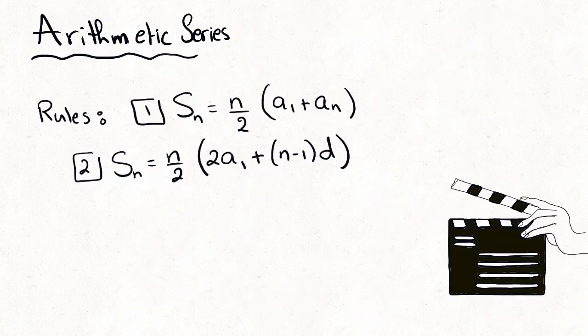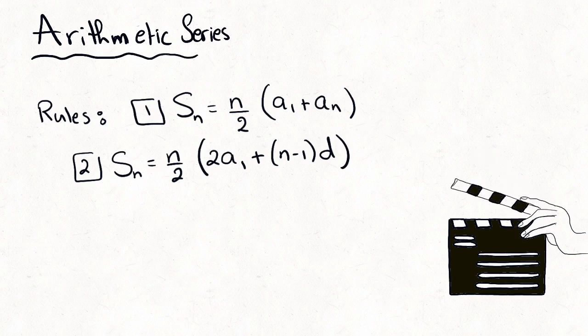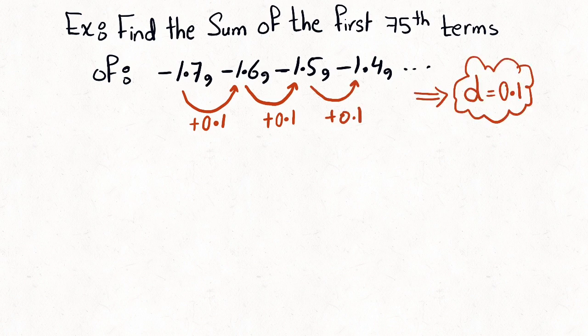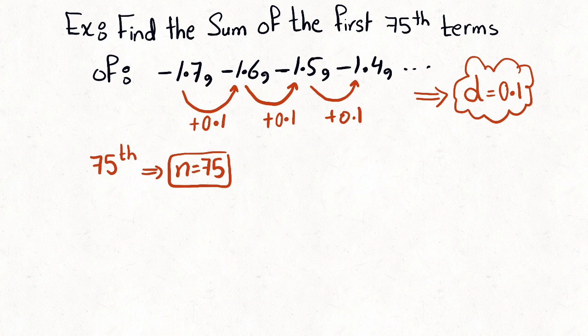Now we move to arithmetic series. Kindly take notes of the following rules. For the first type of question — find the sum of the first 75 terms of a sequence — we discover that d = 0.1, a1 = negative 1.7, and n = 75.